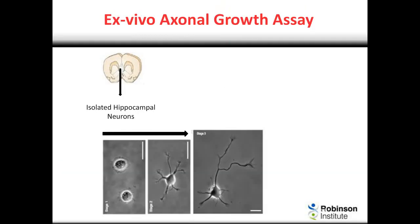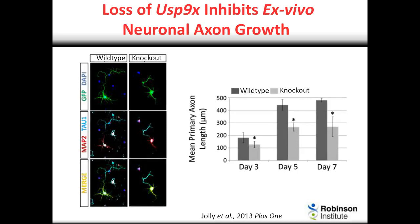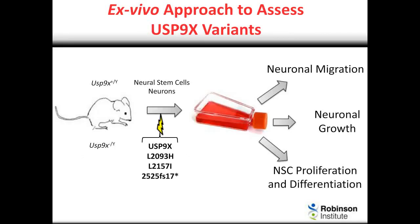For the neuronal growth assay, we turned to isolating post-mitotic hippocampal neurons, which grown in culture undergo quite nice axonal growth whose kinetics you can monitor. In the absence of USP9X, we saw really stunted growth of the axons, which was quite significant when quantitated. So this was really great for us, because as we saw in vivo, we were able to identify defects in neuronal migration, neuronal growth and progenitor cell behaviour in cells cultured ex vivo from the knockout mouse.